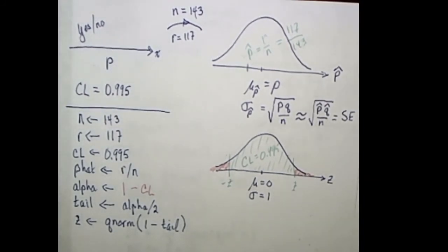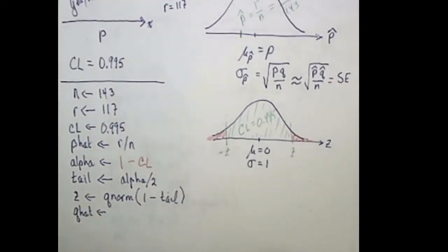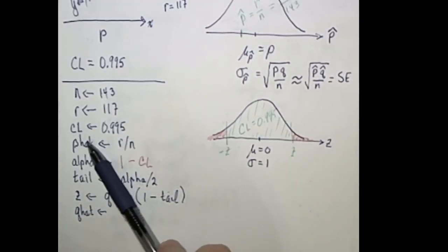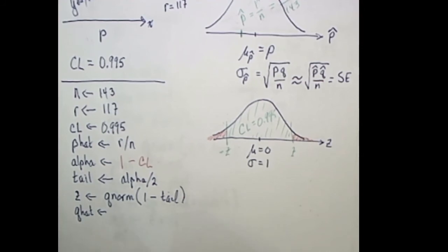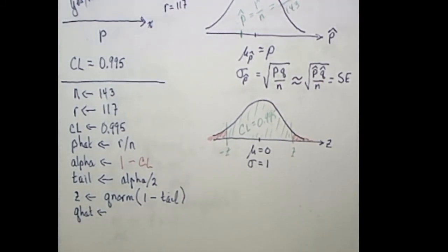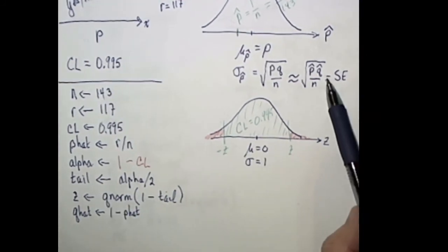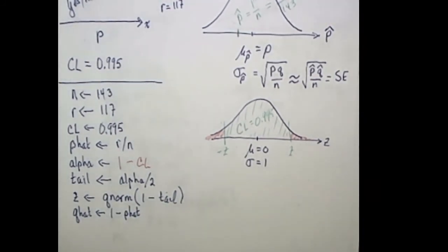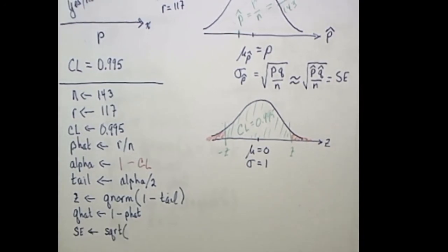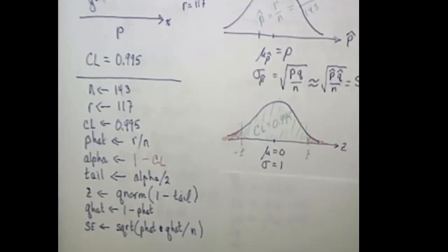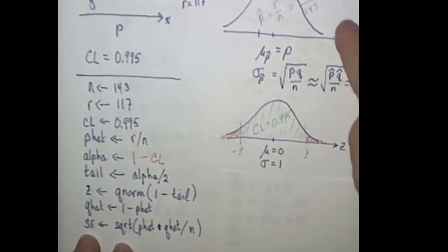We already have R calculating p hat in our script. So q hat is just going to be one minus p hat. So now we've got all the pieces needed to find this standard error. The standard error is the square root of... So se is equal to the square root of p hat times q hat divided by n. So now we know a good approximation for the standard deviation of this distribution.